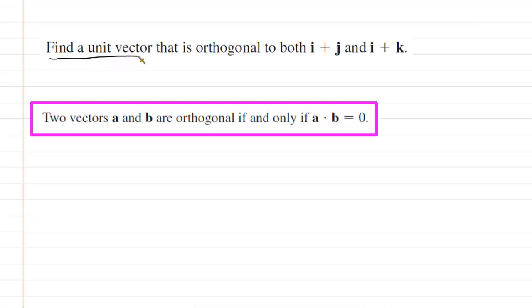Here we have to find a unit vector that is orthogonal to, also known as perpendicular to, these given vectors. And the key idea to help us through this is to note that two vectors, let's call them A and B, are going to be orthogonal or perpendicular to each other if their dot product is equal to zero. So this will be the key idea to help us solve this.